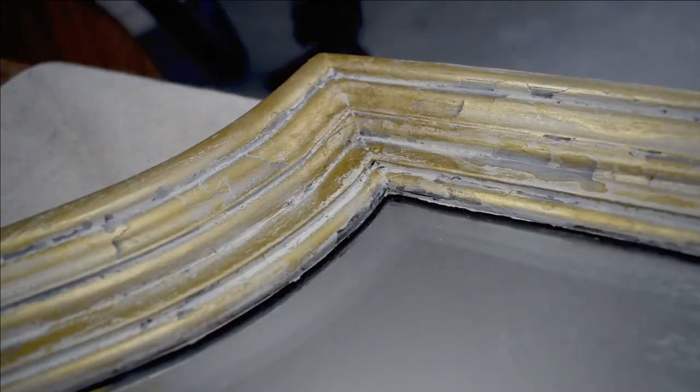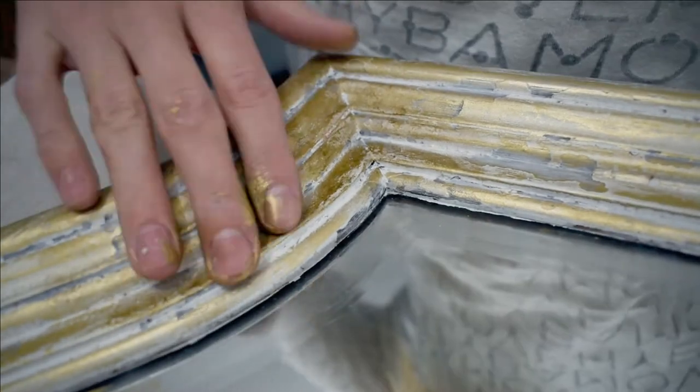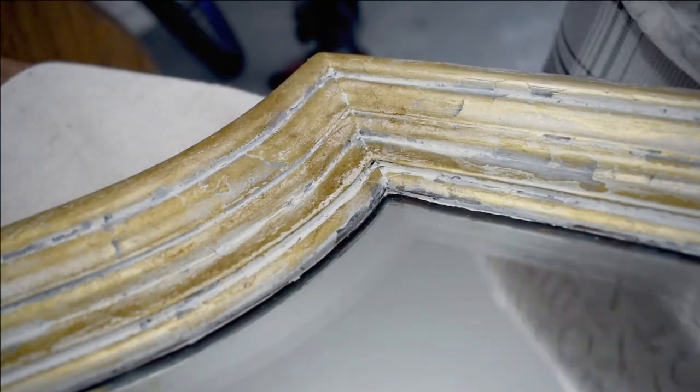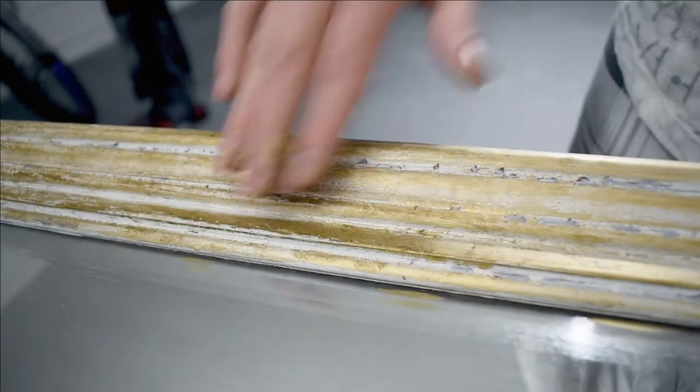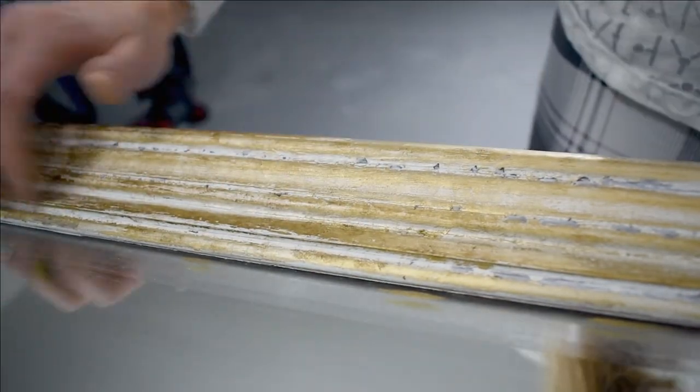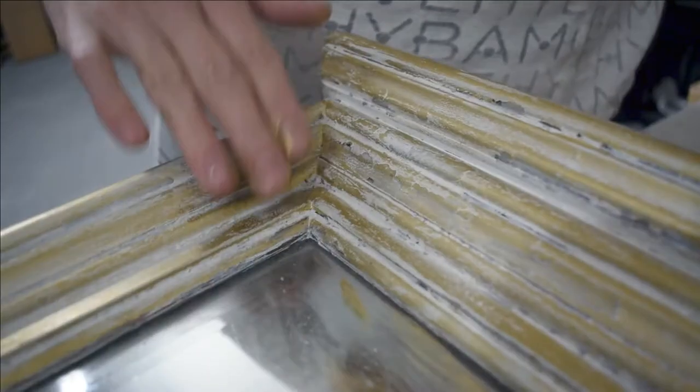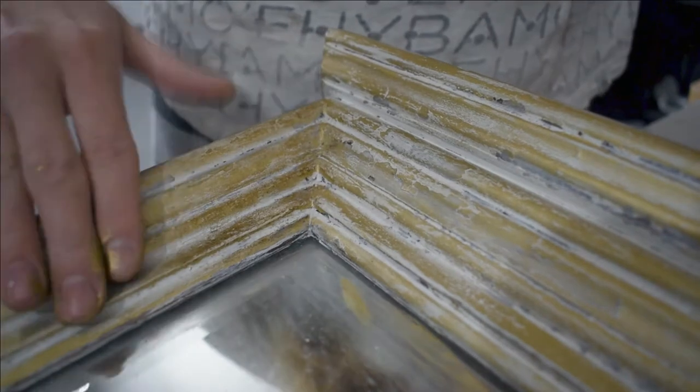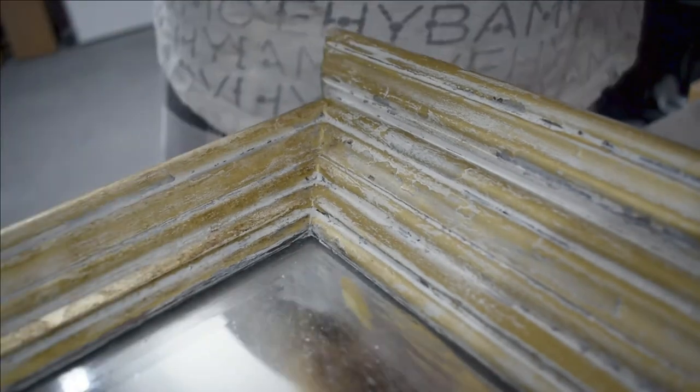If you want an extra artistic challenge, you can play around with shadows and highlights here. Maybe put some extra brown in the corners to make shadows, and use the gold and white to your advantage to make highlights. But if you're not up for that or have no idea what I'm talking about, that's totally okay. Just put it wherever feels right to you—there's not really a right answer.